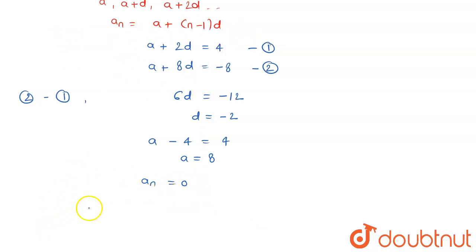So I'm going to use this formula: a, which is 8, plus (n - 1) - because I do not know the value of n - into d, and d is -2, is going to be 0.